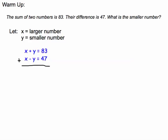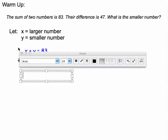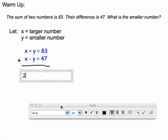If I add them together, I'm left with x plus x, which gives me 2x. The y's add to 0, so they are gone, and I do 83 plus 47, which is 130.